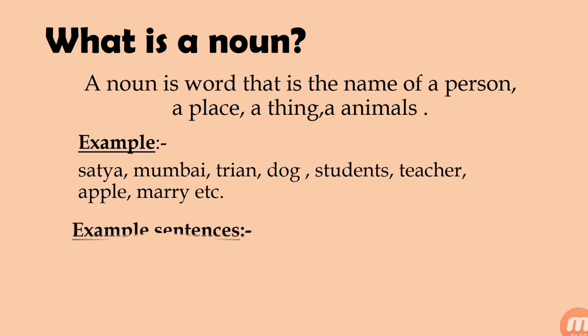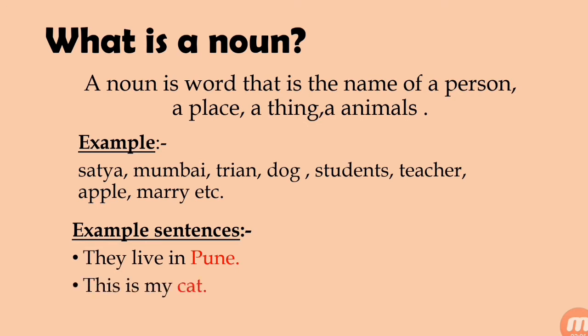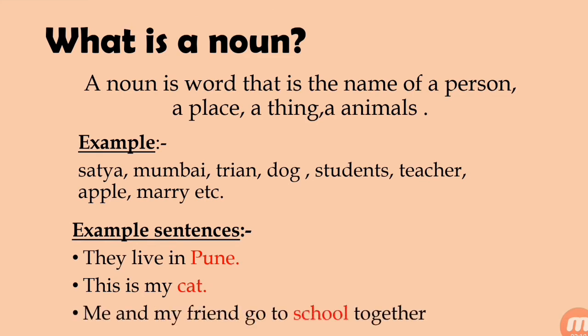Let's see a few example sentences. First: 'They live in Pune.' Pune is a place, so Pune is a noun in this sentence. Second: 'This is my cat.' Cat is an animal, so cat is a noun. Third: 'Me and my friend going to school together.' Can you identify the noun? It's school. School is a place, so you can easily identify the noun in a sentence. Regularly, noun is there in whatever sentences we use daily.